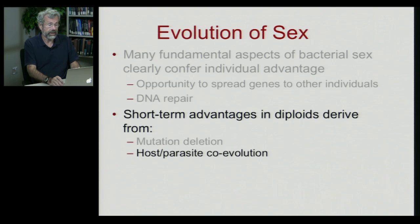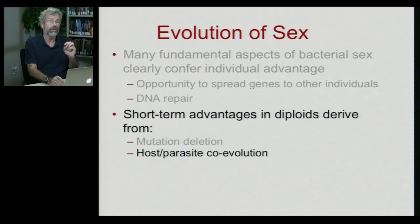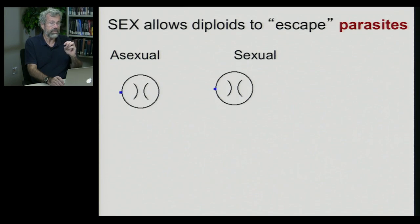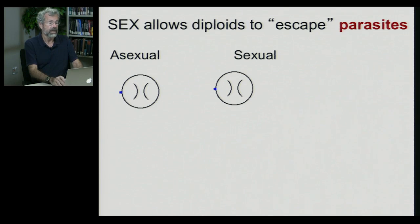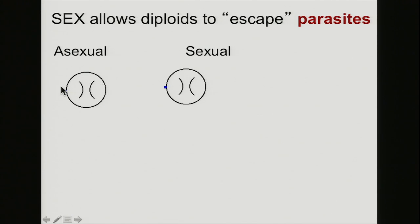The second major advantage to diploids derives from a process we'll see in more detail in the last few lectures: host-parasite coevolution. Here we're thinking about our individual that engages in sex as a host species that gets infected by much smaller organisms. We have our diploid organism ready to breed, and the little blue dot is like a virus or bacteria capable of overcoming the immune system or defense system of the host. It's likely the same for asexual and sexual individuals that eventually a parasite finds their cells and is able to infect them.